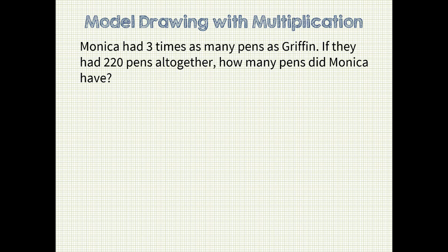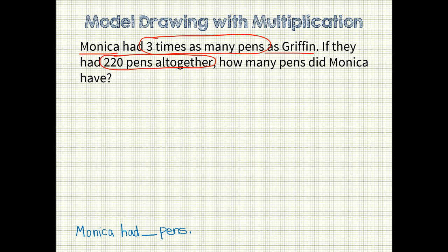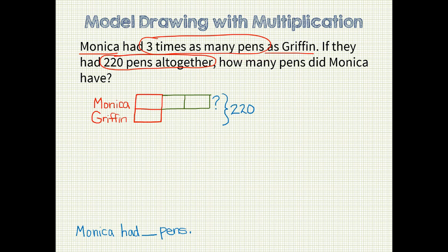Let's look at another problem. Monica had three times as many pens as Griffin. If they had 220 pens altogether, how many pens did Monica have? My problem statement is: Monica had blank pens. Monica had three times as many pens as Griffin and they had 220 pens altogether. I will first start with equal size unit bars for Monica and Griffin. Since the problem tells me that Monica had three times as many pens as Griffin, I will add two more unit bars to hers. We need to know how many pens Monica had, so that is where my question mark goes. The problem tells us that Monica and Griffin had 220 pens altogether, so I drew brackets to indicate that.